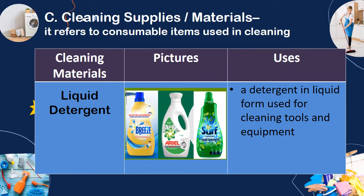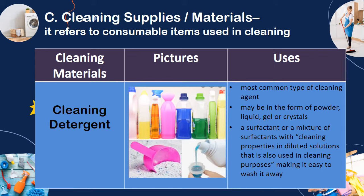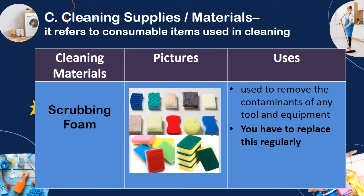The cleaning supplies and materials refer to consumable items used in cleaning. Examples include liquid detergents — a detergent in liquid form used for cleaning tools and equipment. Water, also known as universal solvent, is a liquid used for cleaning most tools and equipment. Cleaning detergent is the most common type of cleaning agent and may be in the form of powder, liquid, gel, or crystals — a surfactant or mixture of surfactants with cleaning properties in diluted solution. Paper towels are absorbent textiles made from paper, used in drying hands, wiping windows, dusting, and cleaning up spills. Scrubbing foam is used to remove contaminants from any tool and equipment, and should be replaced regularly.